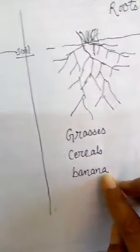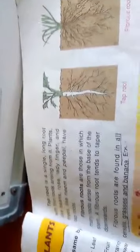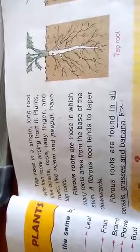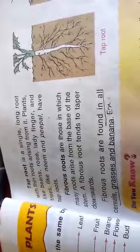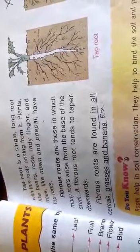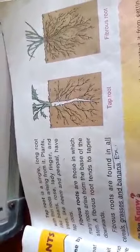Just showing two pictures may not make the idea fully clear, so let us also look at the book diagram. The book shows: taproot — a single long root with thin roots arising from it; and fibrous root — in which many roots arise from the base of the stem. Now let us see some real examples of taproot and fibrous root plants.